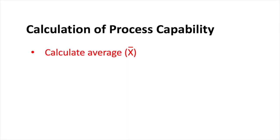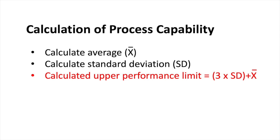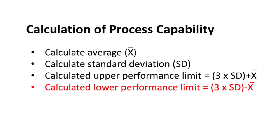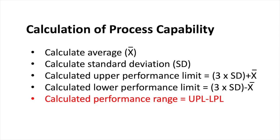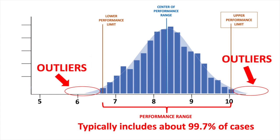Process Capability is a measure of the ability to fit a process within the performance specifications. To calculate CP on our batch of data, we'll first calculate the mean or average value of our batch, then calculate the standard deviation — that's just a measure of how much variability there is. We'll then multiply the standard deviation by 3 and add it to the average to get the calculated upper performance limit. Next, we'll subtract 3 times the standard deviation from the average to get the calculated lower performance limit. This calculated performance range will typically include about 99.7% of the values in a large batch of data.